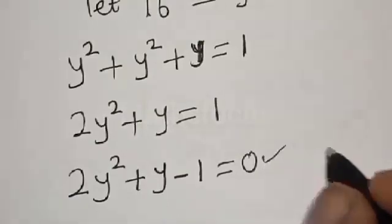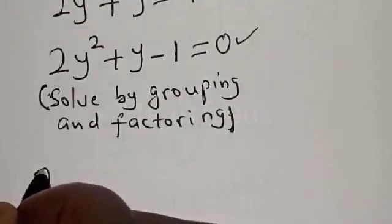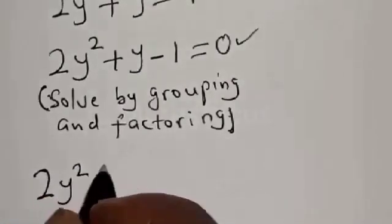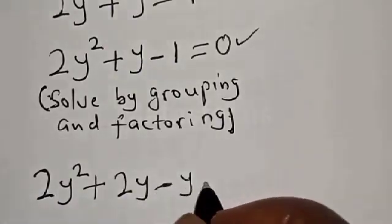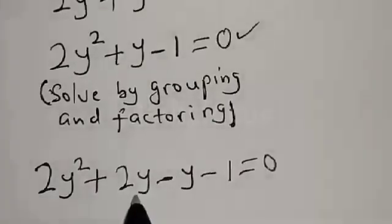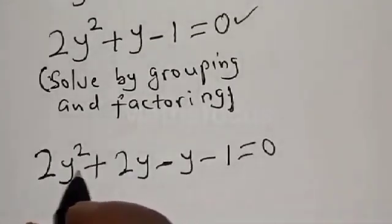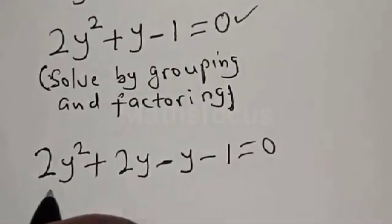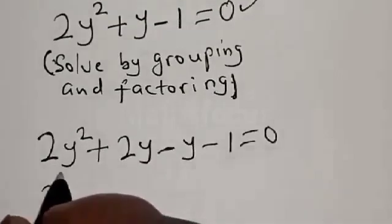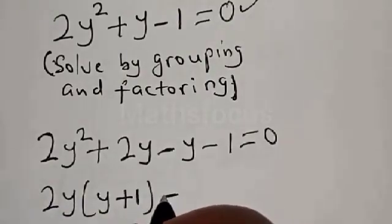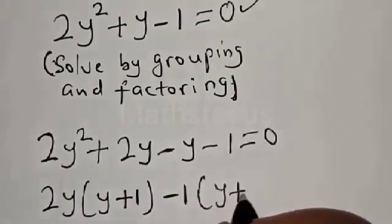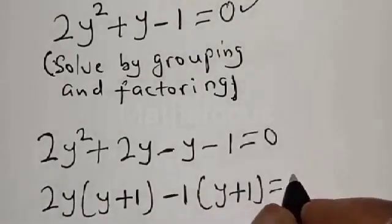Now this is a quadratic equation. Let's solve this by grouping. We have 2y squared plus 2y minus y minus 1 is equal to 0. Here y is common in the first two terms: we have y times (2y + 1) minus 1 times (2y + 1) is equal to 0.